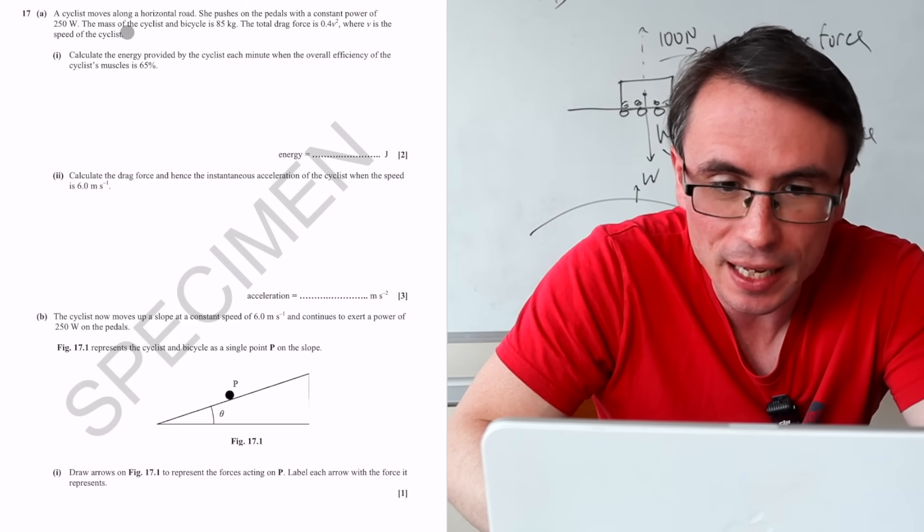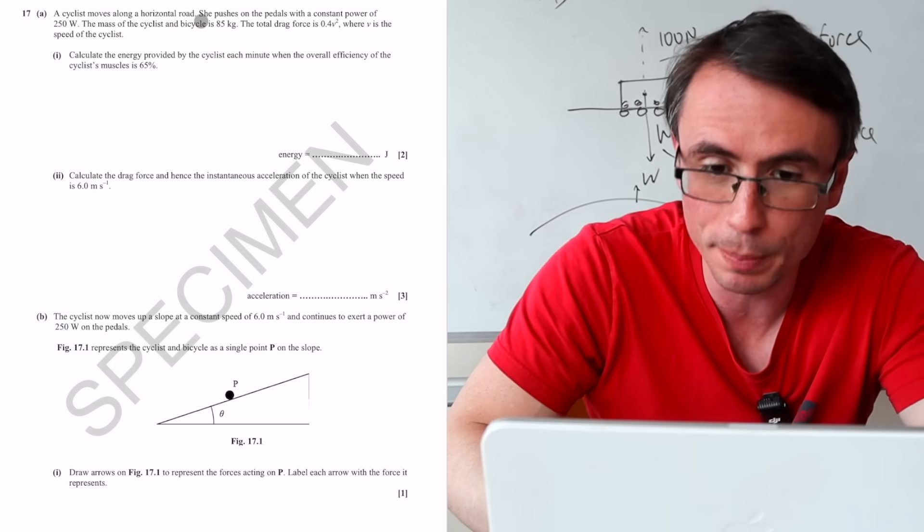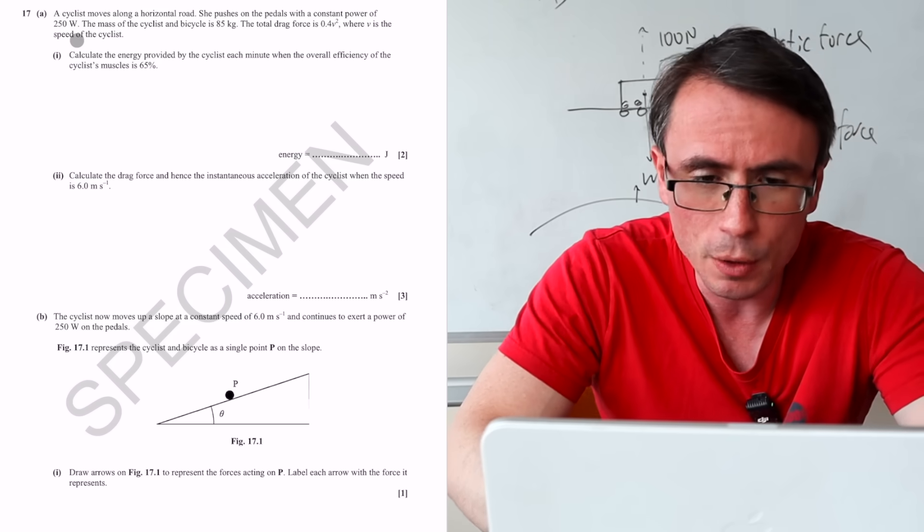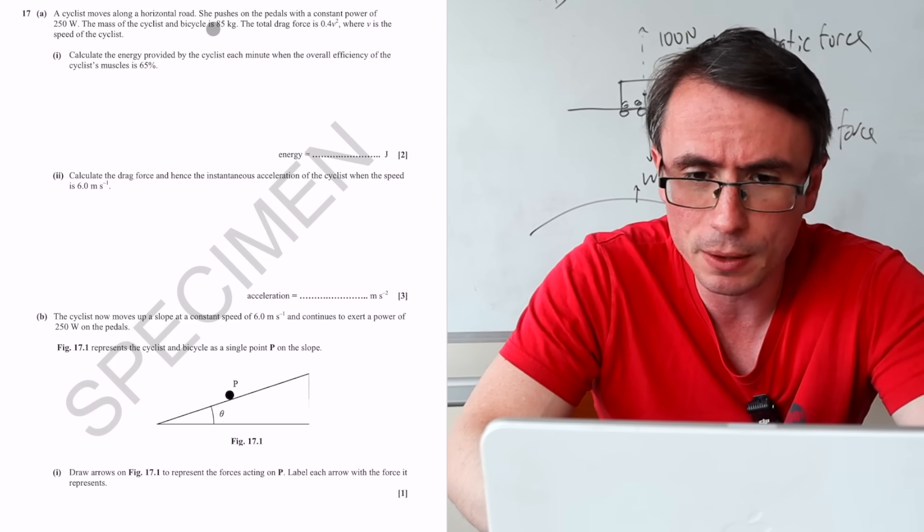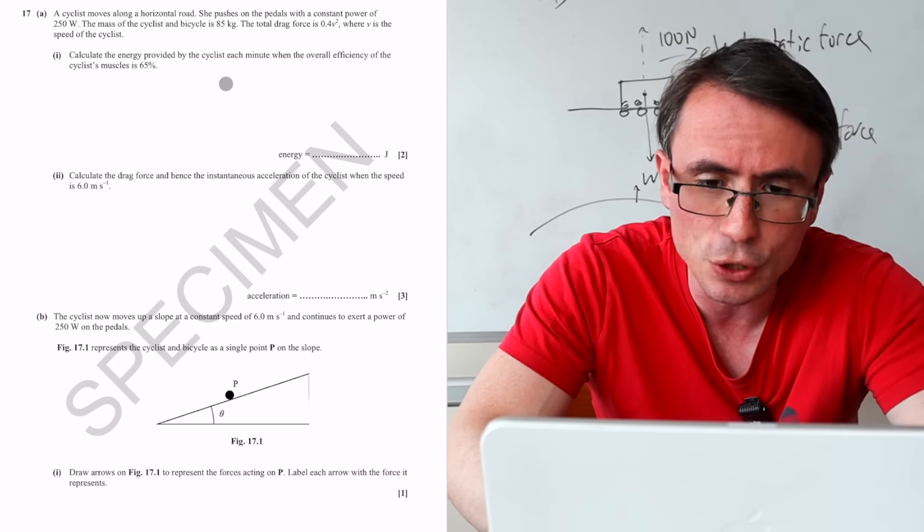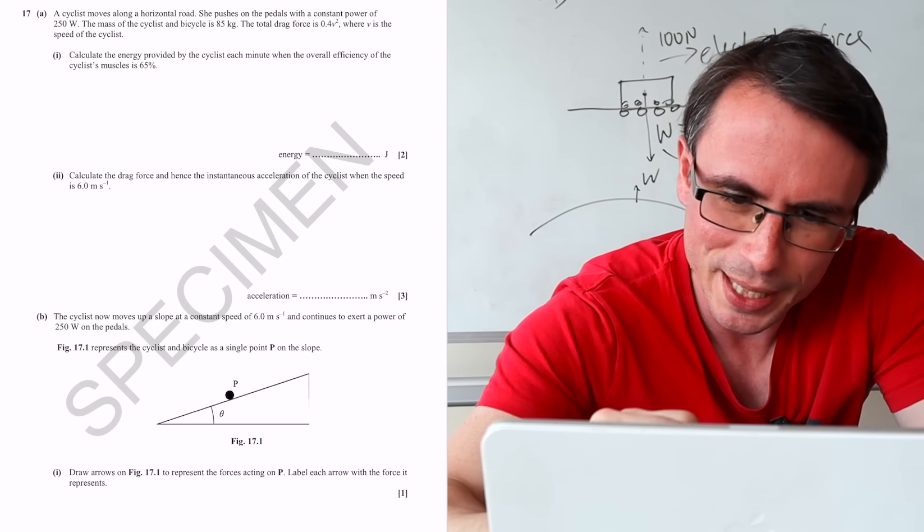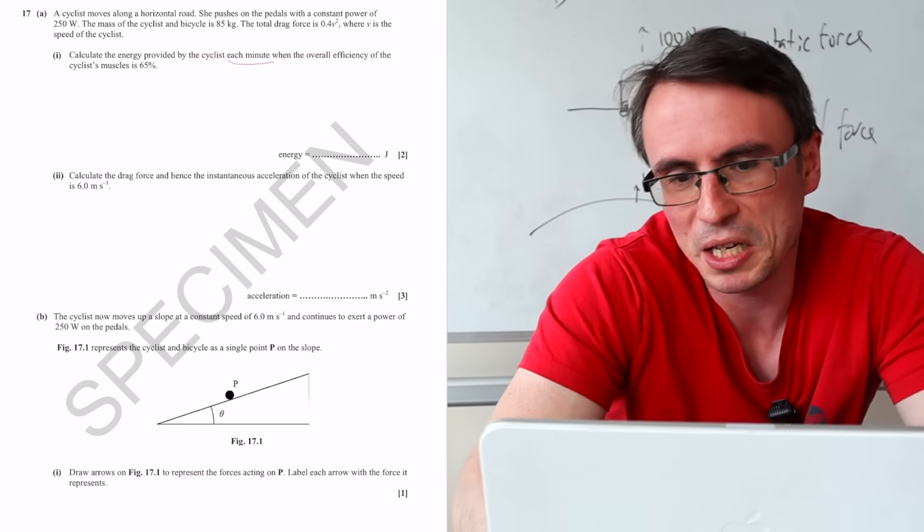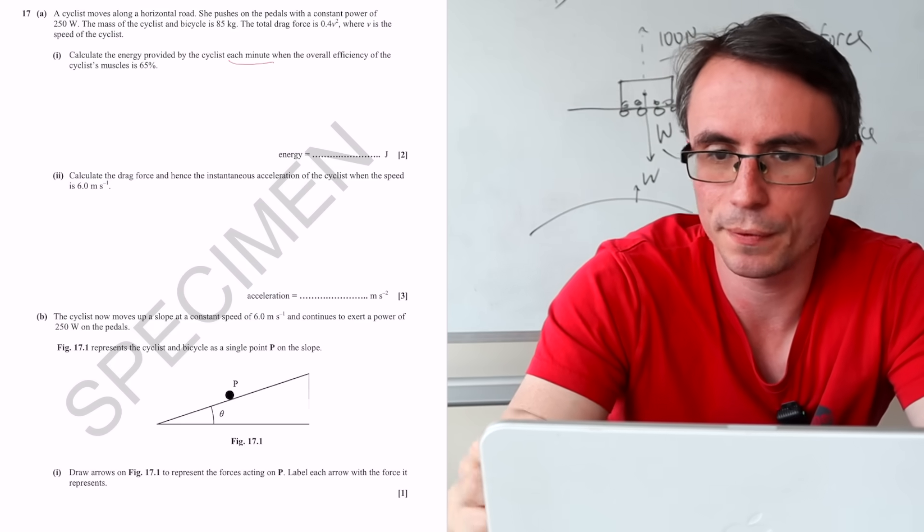We have a cyclist that moves along a horizontal road. She pushes on the pedal with a constant power of 250 watts. We're given the mass and want to calculate the energy provided by the cyclist each minute. It's very possible to miss out little details such as this. I'm just going to underline each minute, and we're given the overall efficiency.